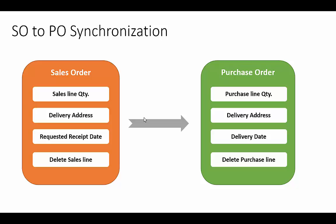In addition, if we change the sales line quantity, delivery address, or requested ship date, the purchase order line quantity, address, and delivery date will also get changed automatically. For example, if we change the sales line quantity — either increase or decrease — the purchase line quantity will also increase or decrease accordingly.